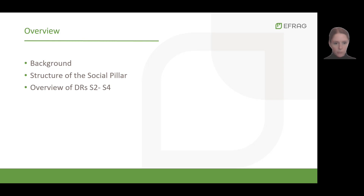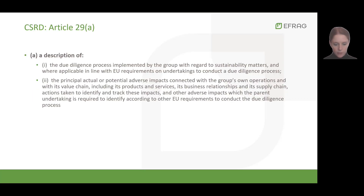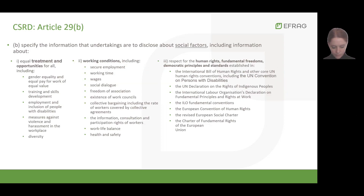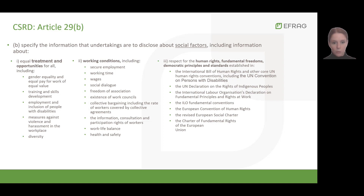Let me start with some background information. Based on the EU Corporate Sustainability Reporting Directive, companies are to report on impacts connected with their activities, including the value chain, through alignment with internationally recognised frameworks. It also includes a mandate to develop standards on social factors and human rights, covering equal treatment and opportunities for all, working conditions, and the respect for human rights, fundamental freedoms, democratic principles, and standards established in international instruments. And this is precisely what S2, S3 and S4 are based on.